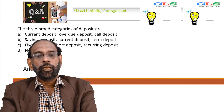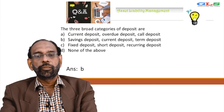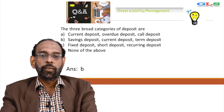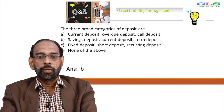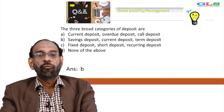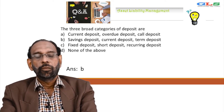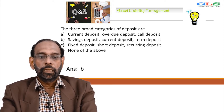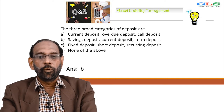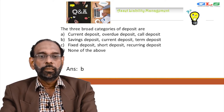The three broad categories of deposit are: A: current deposit, overdue deposit, call deposit; B: saving deposit, current deposit, term deposit; C: fixed deposit, short deposit, recurring deposit; D: none of the above. The answer is B — saving deposit, current deposit and term deposit.